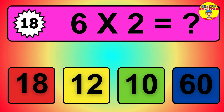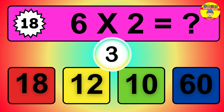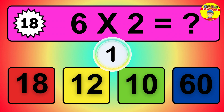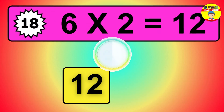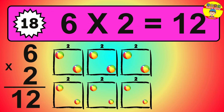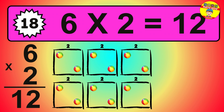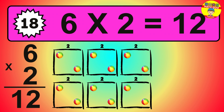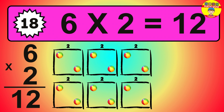Question 18. 6 times 2 equals what? The answer is 6 times 2 is 12. To calculate, we have 6 groups with 2 balls each one. So how many balls do we have? 12 balls.